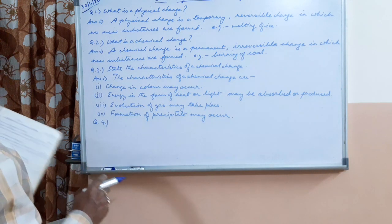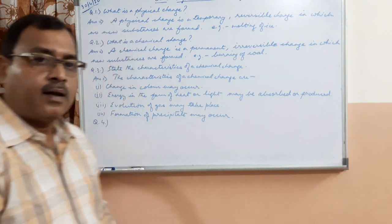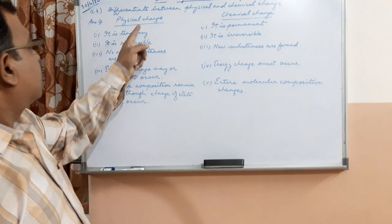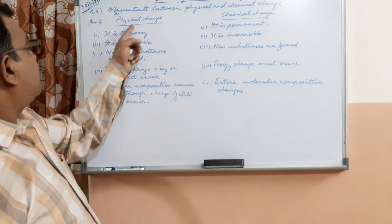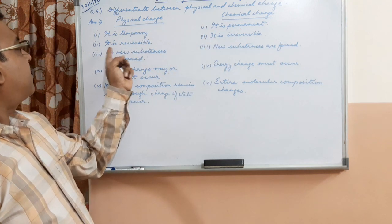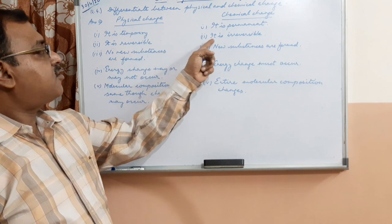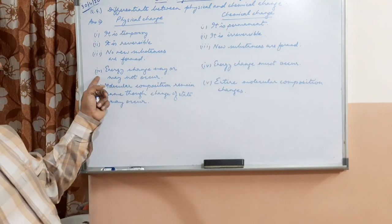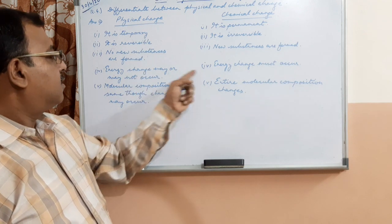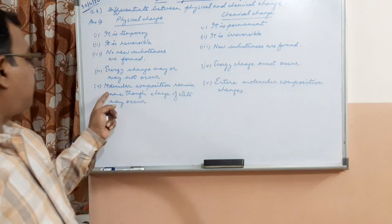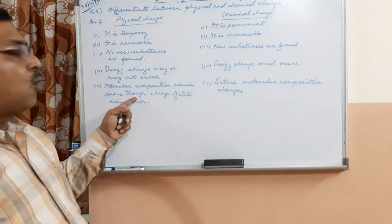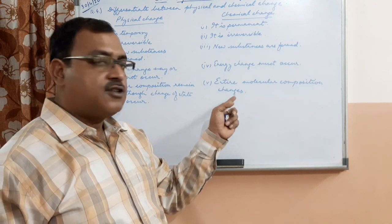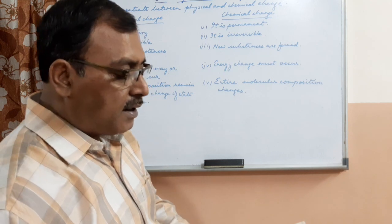Question number 4. Differentiate between physical and chemical change. In physical change it is temporary, reversible, no new substances are formed, energy change may or may not occur, molecular composition remains same though change of state may occur. In chemical change it is permanent, irreversible, new substances are formed, energy change must occur, entire molecular composition changes. So all these 5 points must be written.